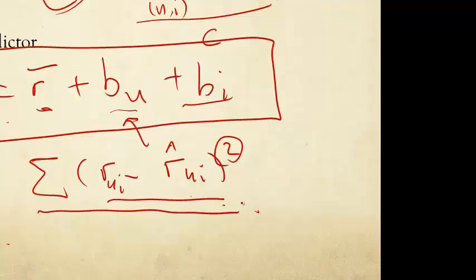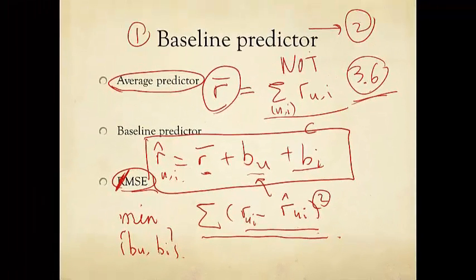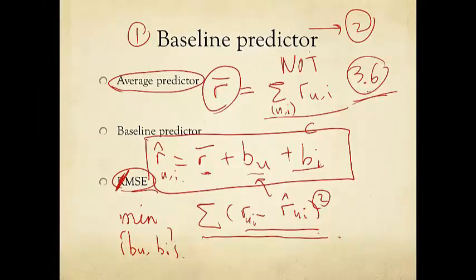So, this is the function involving some squares of the B-U and B-I terms. R-bar is not your variable because it is just the average, say 3.6 for Netflix, and B-U, B-I are your variables. That's an optimization problem.